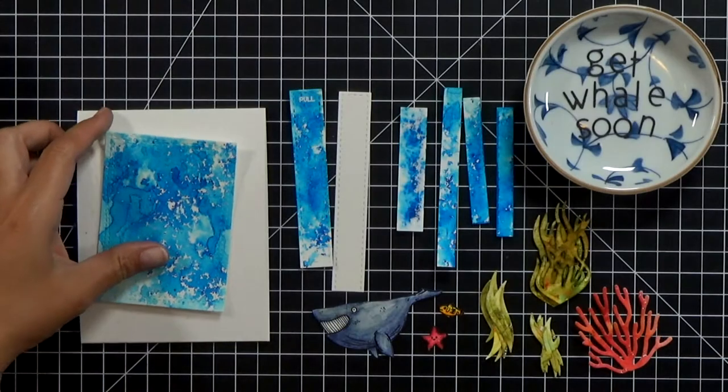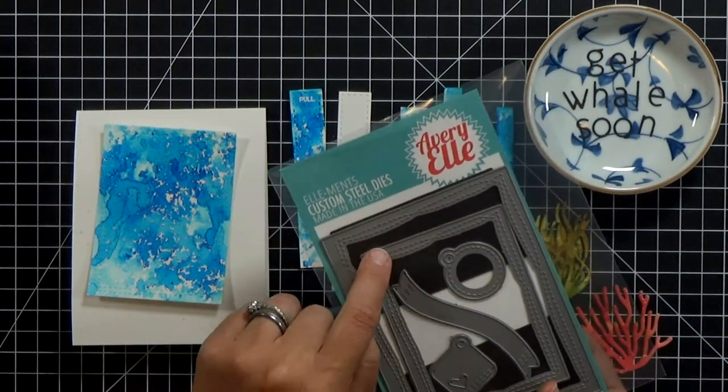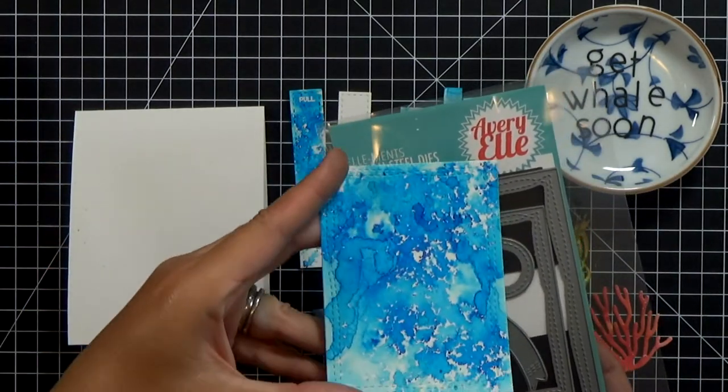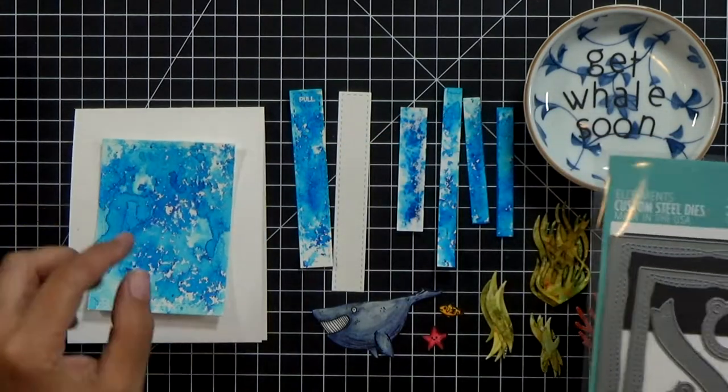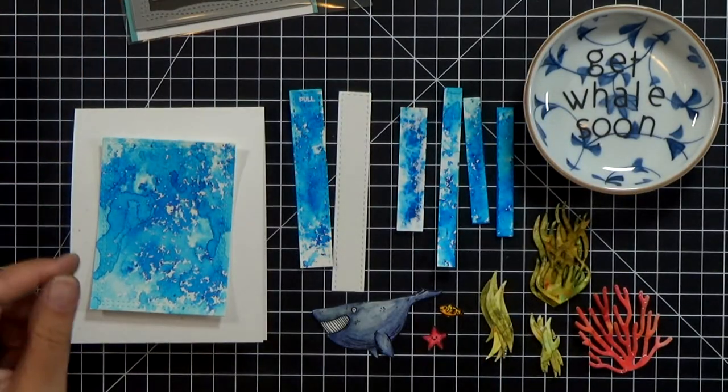Okay let me show you what I cut out. The blue piece, that big one, I used the smaller wonky stitched rectangle die from Avery Elle.